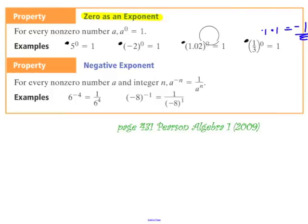The second property is the negative exponent property. For every non-zero number a and integer n, a to the negative n is equal to 1 over a to the n. It's like an inverse pattern. Here we have the example: 6 to the negative 4, and by the negative exponent property, we rewrite that as 1 over 6 to the 4.